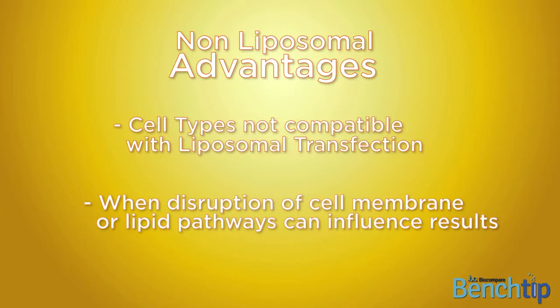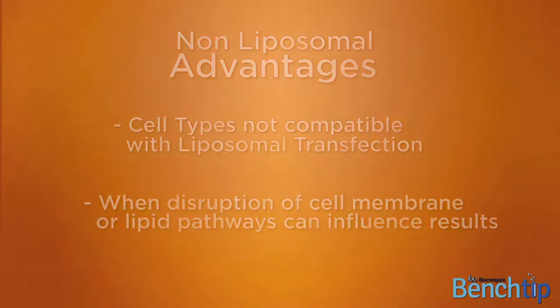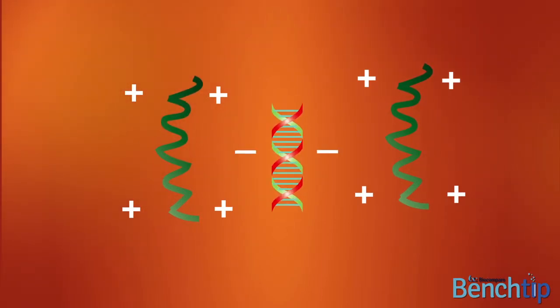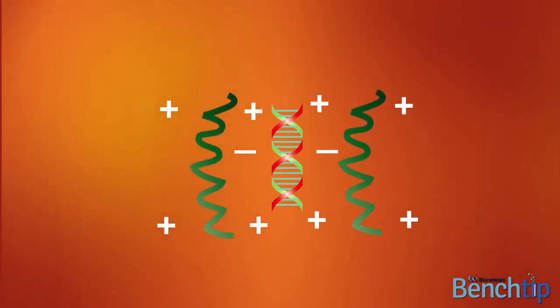So how do these transfection polymers work? As opposed to liposomes, polymers are very effective nucleic acid condensing agents. These polymers provide positive charge side groups that can interact efficiently with the negative backbone of DNA and siRNA and form tight complexes that have a net surface positive charge.